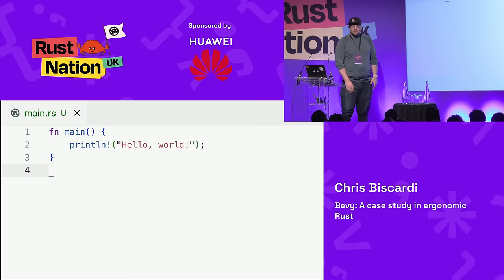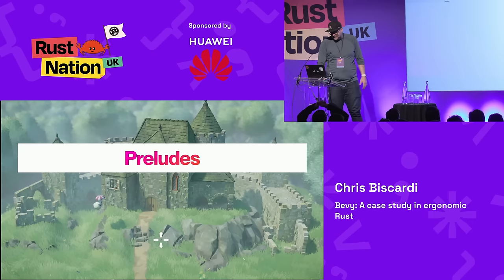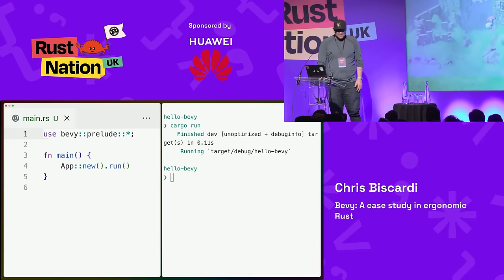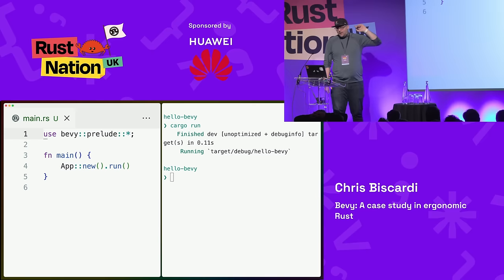We're going to start at the beginning. We're going to talk about preludes first. This is basically Bevy hello world — it doesn't really run anything. We've got `use bevy::prelude::*` at the top, app new, run, whatever. It basically does nothing — it runs and it stops.